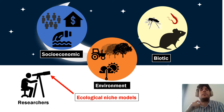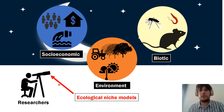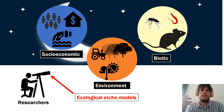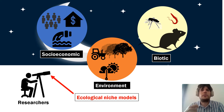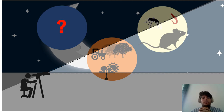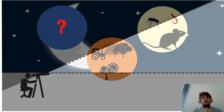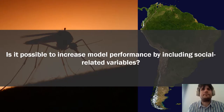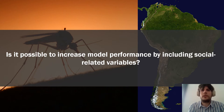One of the most used methodologies is ecological niche models for detecting disease transmission risk. It is a methodology often used for species distribution modeling, for determining the distribution of species, and it can also be used for determining the distribution of disease, transmission cycles, or key species in transmission. But often, when researchers are building ecological niche models, they leave out socioeconomic or social-related variables, using just environmental or biotic variables. So my question is: is it possible to increase model performance by including social-related variables in ecological niche models?